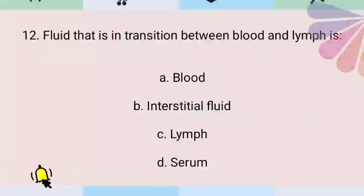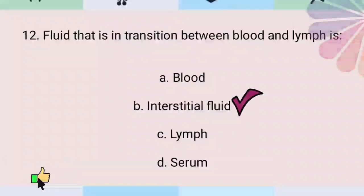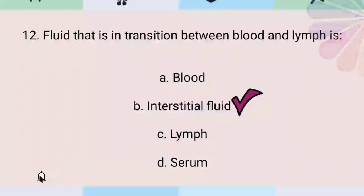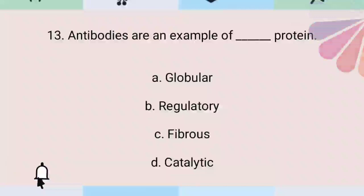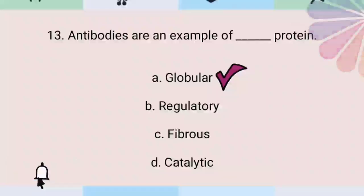Fluid that is in transition between blood and lymph is interstitial fluid. Antibodies are an example of globular protein.